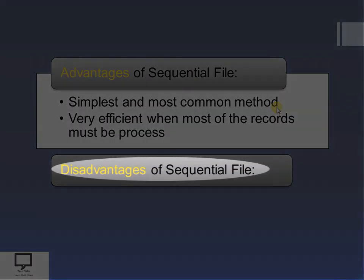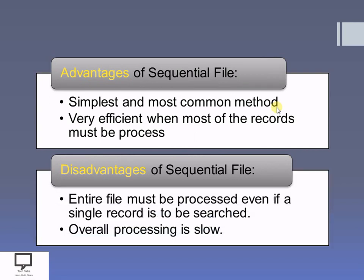Now let's see the disadvantages. If I want to access only a few records, I still need to access the whole file. This is a disadvantage of the sequential file. And since all records must be accessed, the time complexity required will be very high, which means the overall processing will also be slow.